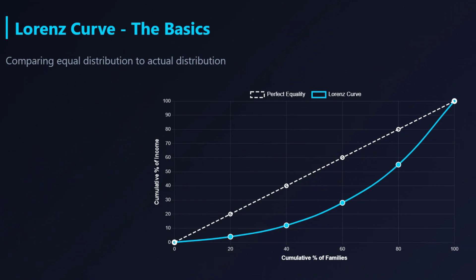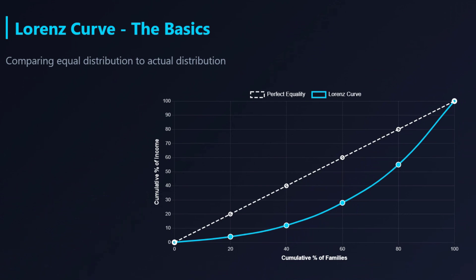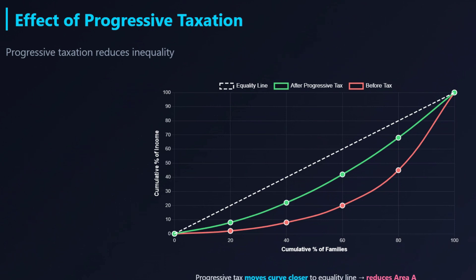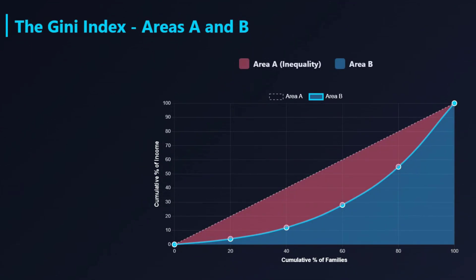Here's where you see the crucial difference. In that ideal world, the poorest 40% of families would earn 40% of the income. But in reality, they almost always earn far, far less. This gap between the ideal straight line and the real-world data is what creates the Lorenz Curve — it's that visible sag away from perfect equality. The size of that belly between the ideal line and the real curve gives us a direct visual for how much inequality there is. The deeper the sag, the more unequal the society. It's inequality you can literally see.